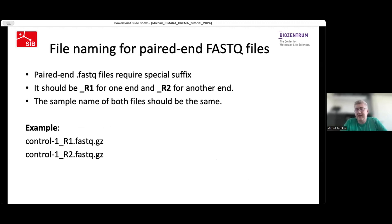For proper paired-end FASTQ file processing, paired-end FASTQ files require a special suffix at the end. For the first read in the pair, it should be the R1 suffix; for the second read, it should be underscore R2. ISMAR understands only these suffixes, so please make sure your FASTQ files have the correct suffixes for proper processing.